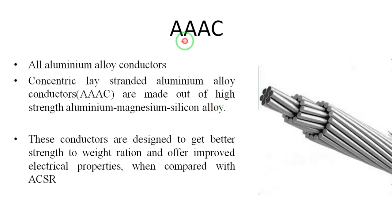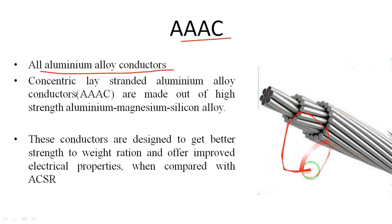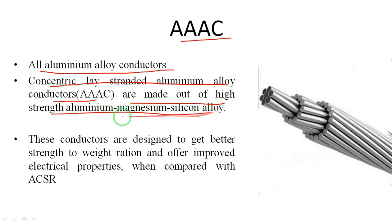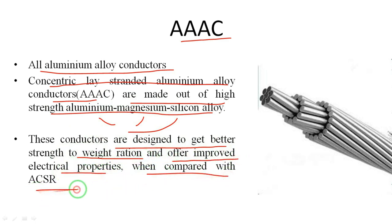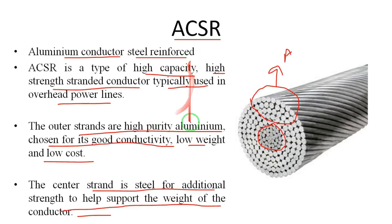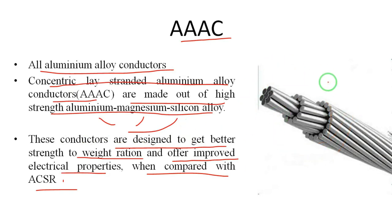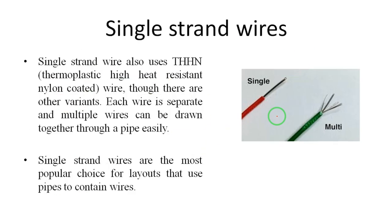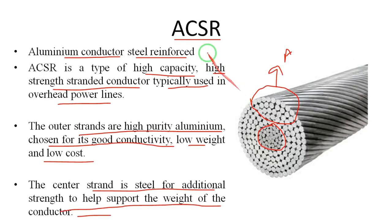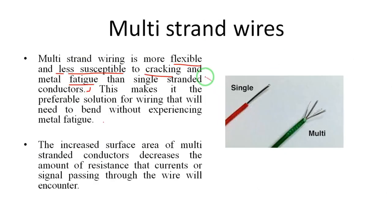The last wire type is AAAC — All Aluminium Alloy Conductors. The complete wire is an aluminium conductor with some alloys. These concentric lay stranded aluminium alloy conductors are made out of a high strength aluminium-magnesium-silicon alloy. They are designed to achieve a better strength-to-weight ratio and offer improved electrical properties compared to ACSR. So these are the four types of wires: single strand, multi-strand, ACSR, and AAAC. ACSR and AAAC are used in overhead and transmission lines; single and multi-strand wires are used for indoor and home appliance purposes.